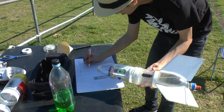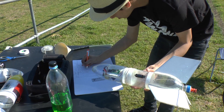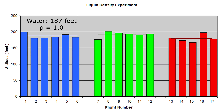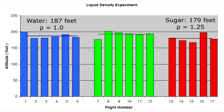And here are the results of those flights. You can see that for this particular rocket the sugar solution performed slightly worse than the water, and equally the alcohol performed slightly better than the water. But again, the differences were fairly small. The full details of this experiment are available on our website with the link in the description.